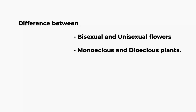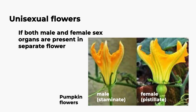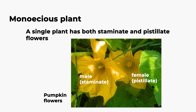Before learning this, we must know the difference between bisexual and unisexual flowers, and monoecious and dioecious plants. If both male and female sex organs are present in the same flower, it is called a bisexual flower — example, hibiscus. If male and female sex organs are seen in separate flowers, it is called a unisexual flower — example, pumpkin. The male flower is called staminate and the female flower is called pistillate.